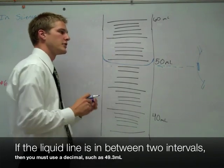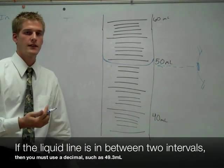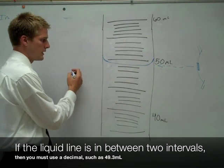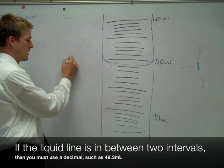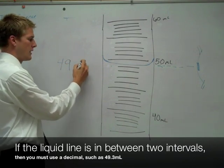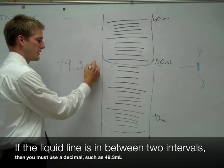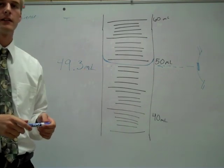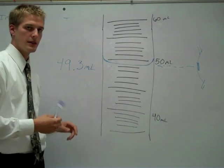50 is here. So, you know it's somewhere in between 49 and 50. However, it's lower than halfway. So, this is going to be 49.3 milliliters. Because it's not on a line, you need the decimal point. So, it's 49.3 milliliters. And that's how you read a graduated cylinder.